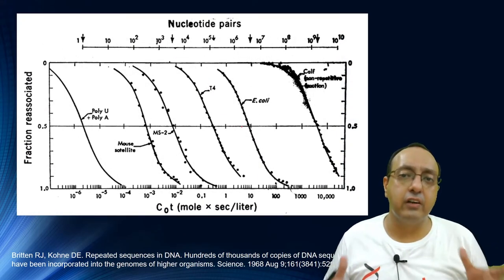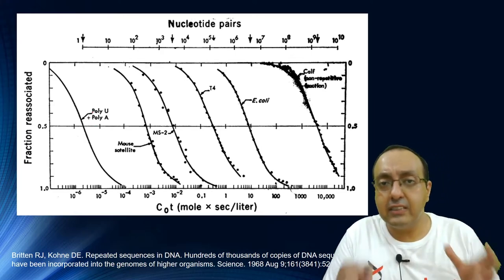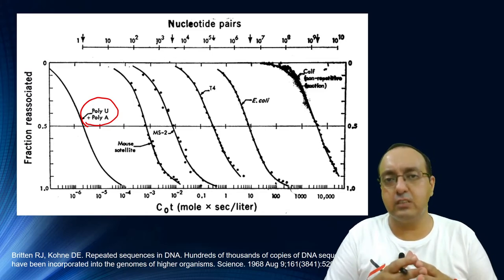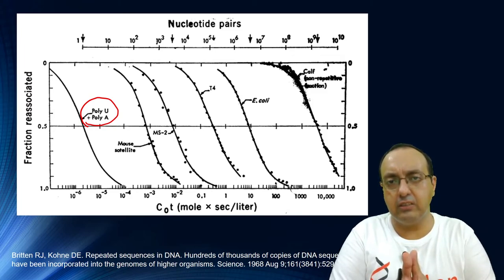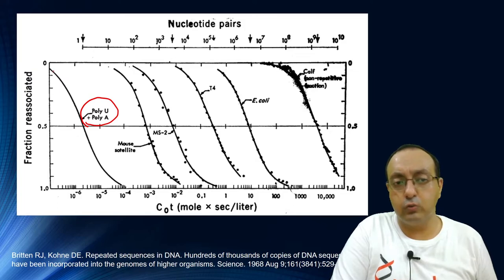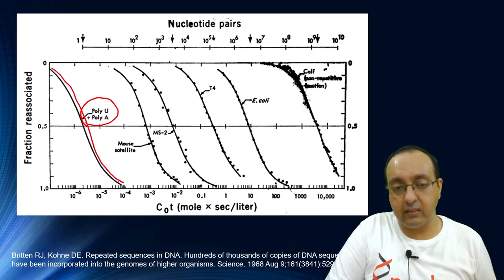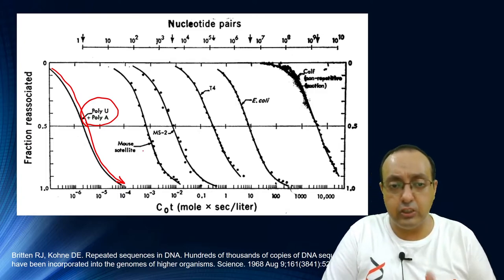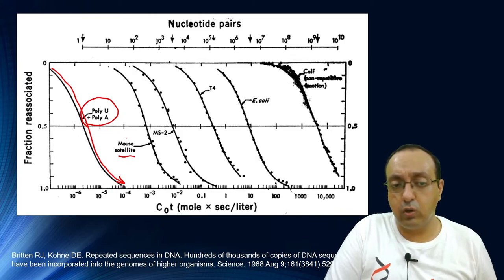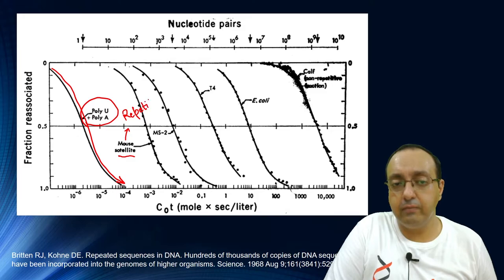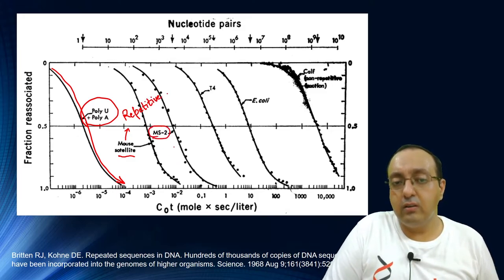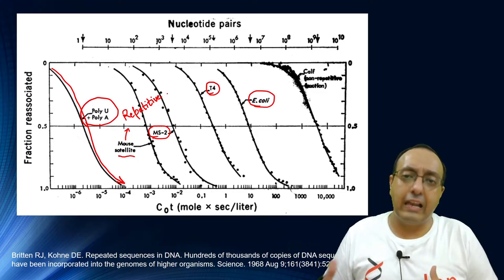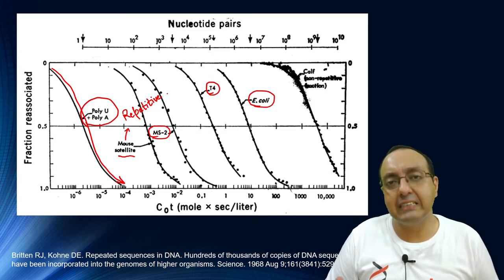When they looked at multiple different genomes, for example very simple synthetic genomes like poly-U and poly-A—just simple as you can get, poly-U poly-A tracks which can just zip against each other—the Cot curve was very fast and dropped off like crazy in very short amounts of time. As you increase the complexity of the genomes, for example mouse satellite DNA, which was the repetitive portion of mouse DNA with lots of repeats, or MS2 phage, T4 phage, E. coli bacterium, they followed different Cot values that were almost related to how much complexity is there in the genome.